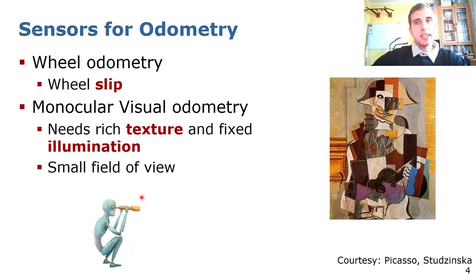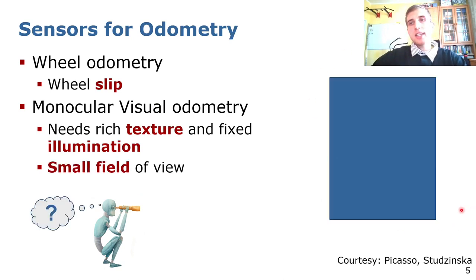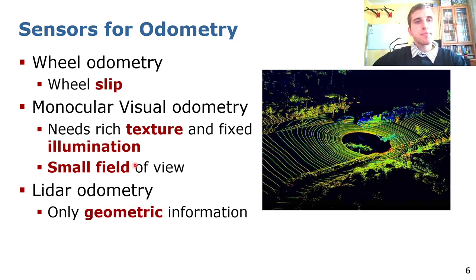On the other hand, if our system relies on cameras we need rich texture and fixed illumination. If there is a dark area or we don't have any texture it's hard to find key points and descriptors to do data association. Additionally, cameras usually have small field of view which restricts the maximum performance of visual odometry. Another very common type of odometry is lidar odometry. Since the range measurements are very precise, this type of sensor provides good geometric information.